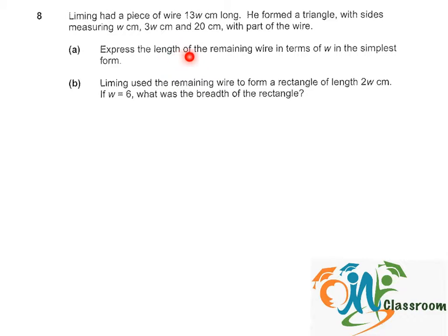Express the length of the remaining wire in terms of W in the simplest form. Okay, so in this case, Li Ming had 13W cm, and for the triangle, she used up a total of W plus 3W plus 20. So that would be 4W plus 20 cm. So for part A,